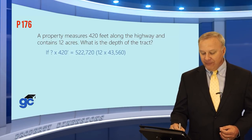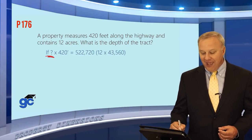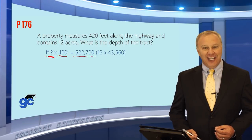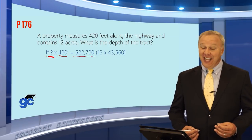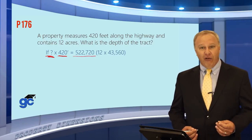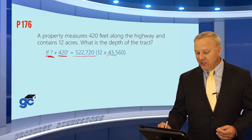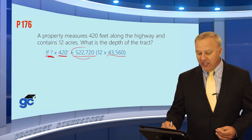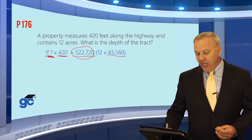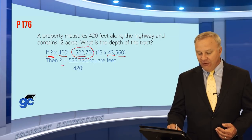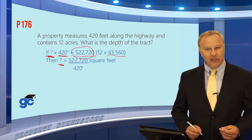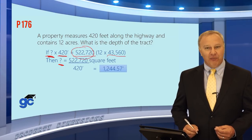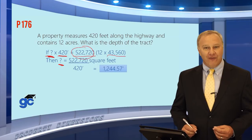To solve it: depth × 420 feet = 522,720 square feet. That number comes from converting 12 acres — since there are 43,560 square feet in one acre, 12 × 43,560 = 522,720 square feet. So depth = 522,720 ÷ 420 feet, which gives a depth of 1,244.57 feet.